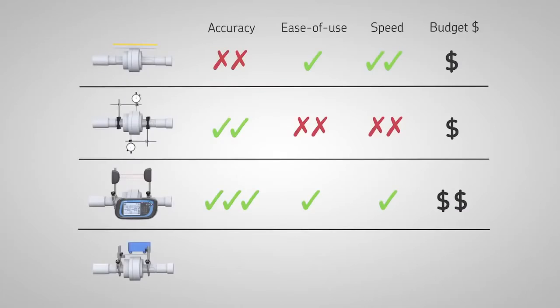The SKF TKSA 11 is designed to combine all of these benefits. It allows accurate shaft alignment and is very easy to use, fast, and affordable for every budget.